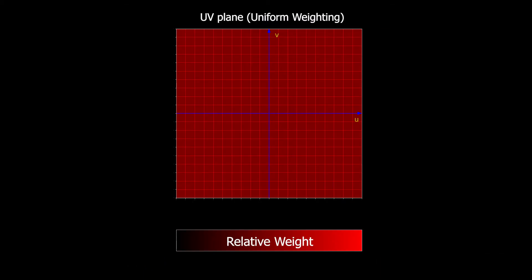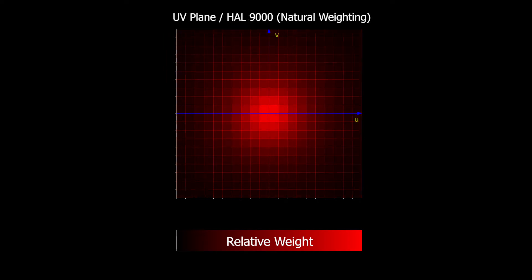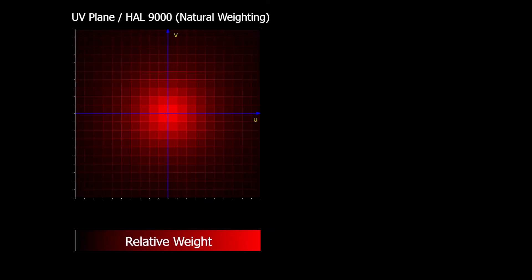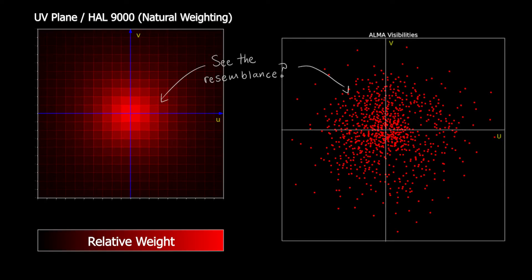To maximize sensitivity, you can use so-called natural weighting, in which all of the visibilities are individually weighted according to their RMS noise level and are then summed within each grid cell. Since lower spatial frequencies, that is shorter baselines, are sampled more often than the higher ones, we find that the inner UV plane will have a significantly higher density of samples, and thus higher total imaging weights per grid cell.